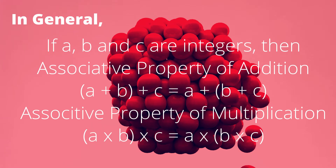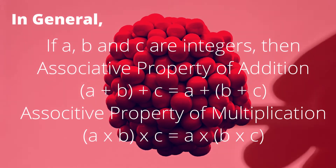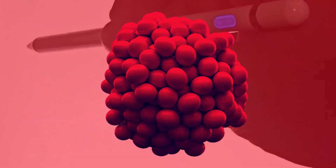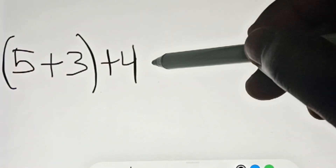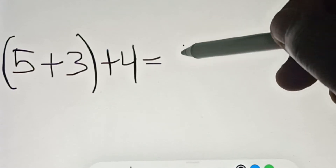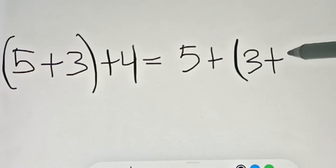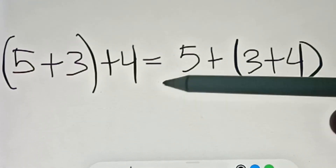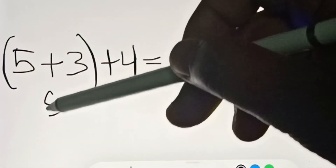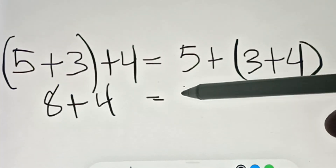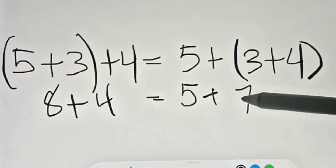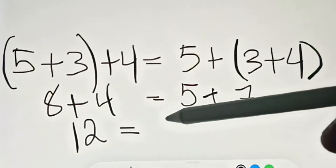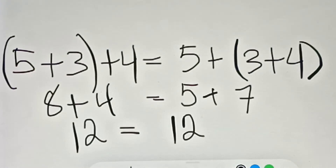So let's have more examples about the associative property. In the associative property of addition, if you have (5 plus 3) plus 4, we add the first two numbers first: 5 plus 3 is 8, plus 4 equals 12. And on the other side, 5 plus (3 plus 4): 3 plus 4 is 7, and 5 plus 7 is also 12. So that's how the associative property works.